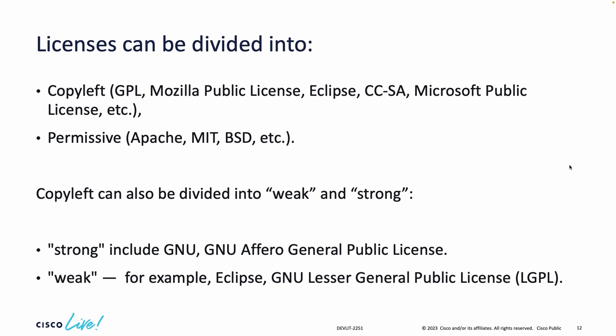Copyleft can also be divided into strong and weak. Strong copyleft includes GNU GPL and GNU Affero General Public License. Weak copyleft includes Eclipse and GNU Lesser General Public License (LGPL). For weak copyleft licenses, it is permissible to compile via dynamic linking weak copyleft licensed code with proprietary software without requiring your derived work to be licensed under the weak copyleft license. Many open source projects include well-known libraries licensed under GNU LGPL, which was called GNU Library License until 1999.